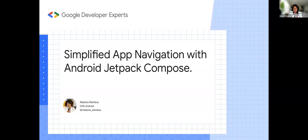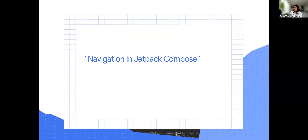I'm going to do this presentation with the assumption that many of us here know what Android is, know what Jetpack Compose is, and know what navigation is too. If anybody doesn't know what navigation is, it's the ability to move from one point to another point in your application. Navigation in Jetpack Compose is pretty important because right now Google is encouraging developers around the world to start using Jetpack Compose due to its ability to make applications faster.